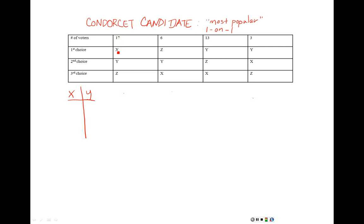To compare candidate X and candidate Y, I look at each column and see whether X or Y is ranked higher, then give all the votes in that column to whoever has the highest ranking. For these 17 votes in the first column, X is in first place and Y is in second place, so X wins those 17 votes. In the next column of 6 votes, Z gets first place but I don't care about Z — Y is in second place and X is in third, so Y is higher and wins those 6 votes.